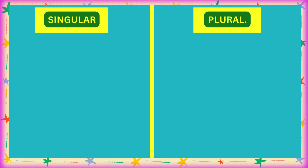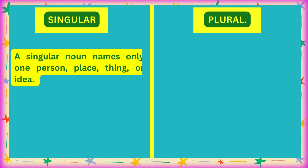A singular noun names only one person, one place, one thing, or one idea. जब हम किसी एक चीज की बात करते हैं, तो हम बोलते हैं singular noun, जैसे a book, a pen — एक किताब है, एक pen है। तो यह singular है, एक चीज की बात कर रहे हैं।